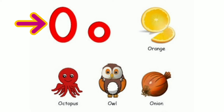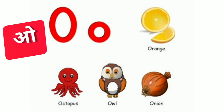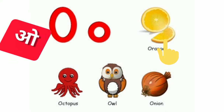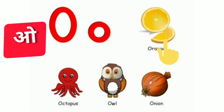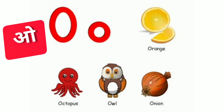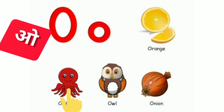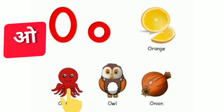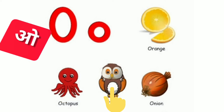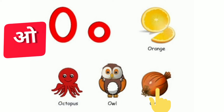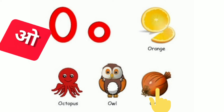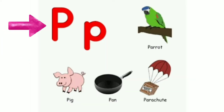O sound is O. Orange. Octopus. Owl. Onion.